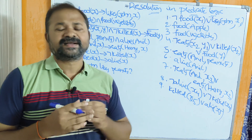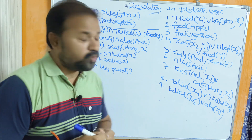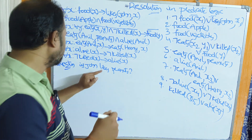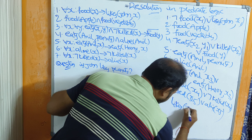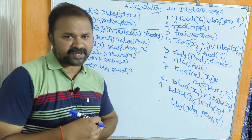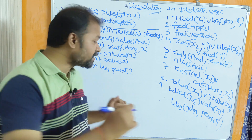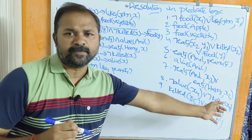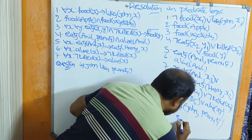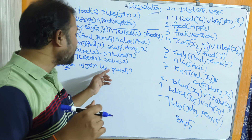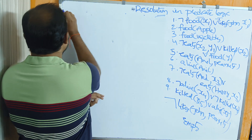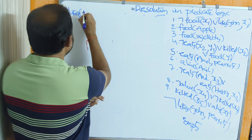Now we have to solve the problem: does john like peanuts? First convert this into clause form. The predicate is 'likes', with first argument john and second argument peanuts. To prove whether john likes peanuts or not, we take the contradiction: negation likes(john, peanuts). We solve step by step until we get an empty clause, which confirms the statement.